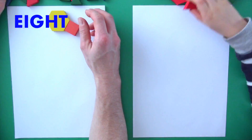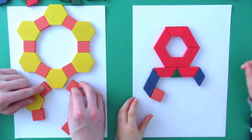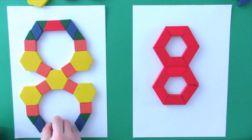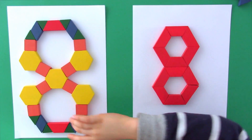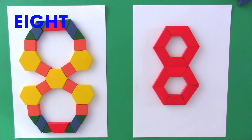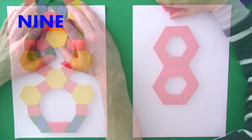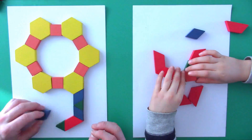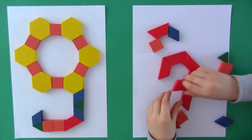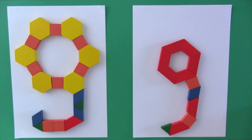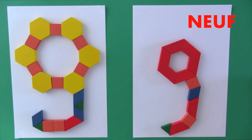What number comes next? Eight. What number is that called in English, Elliot? Eight. How do we say eight in French? Huit. What number comes next? Nine. What's that number called in English, Elliot? Nine. And how do we say nine in French? Neuf.